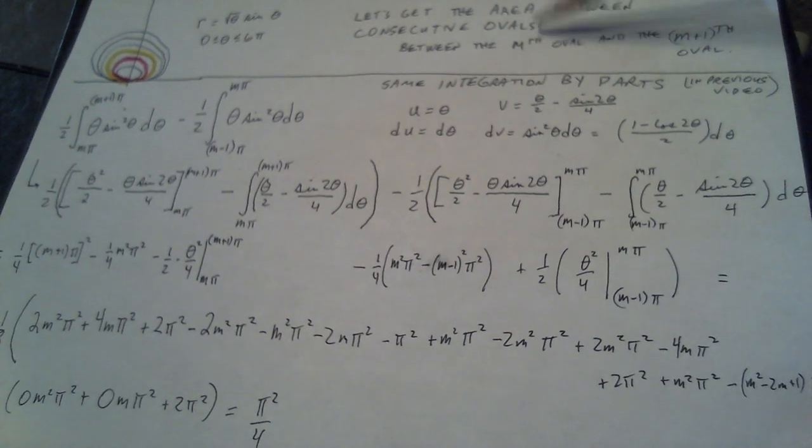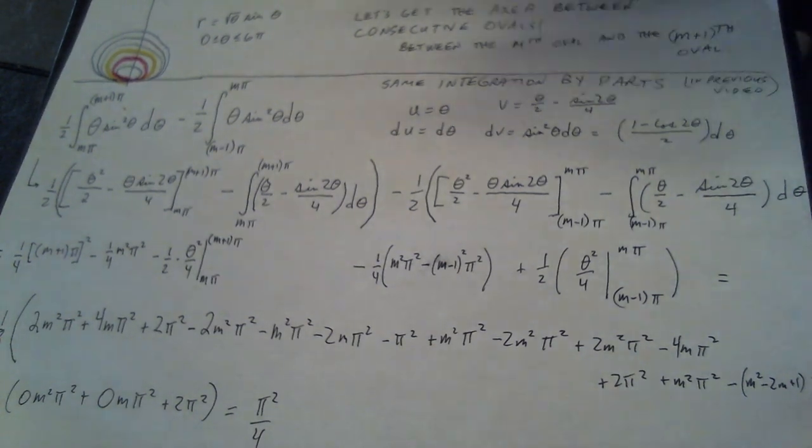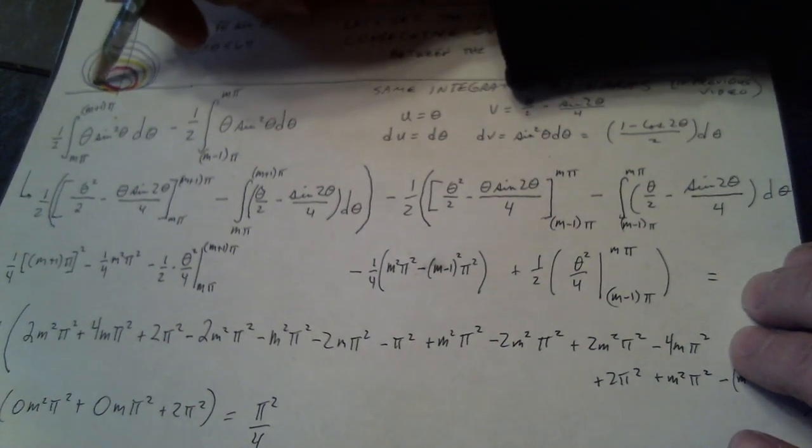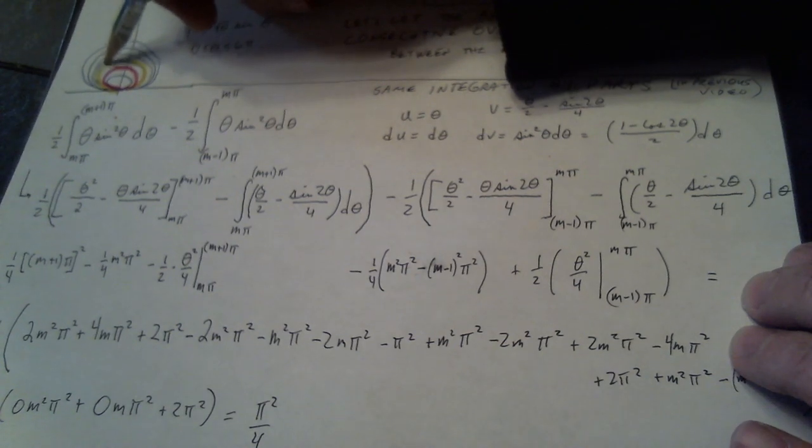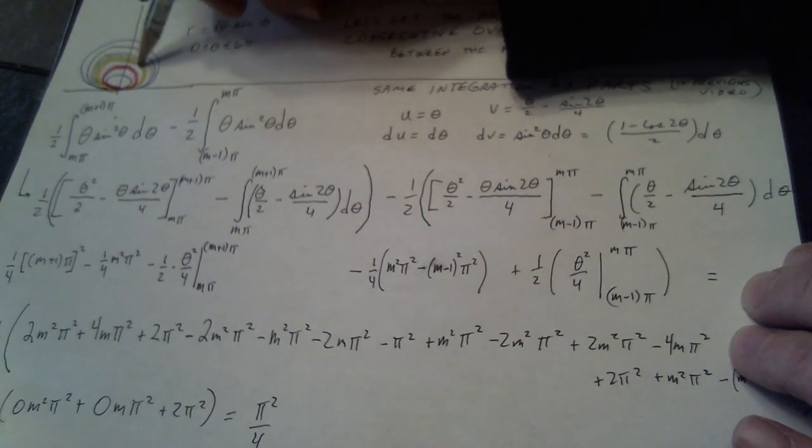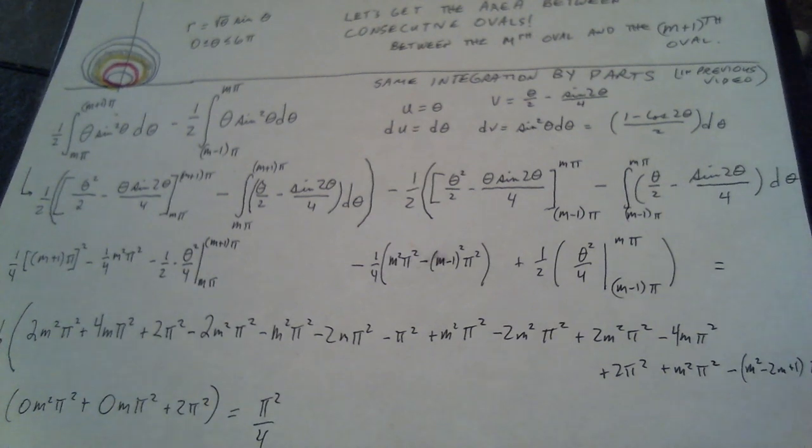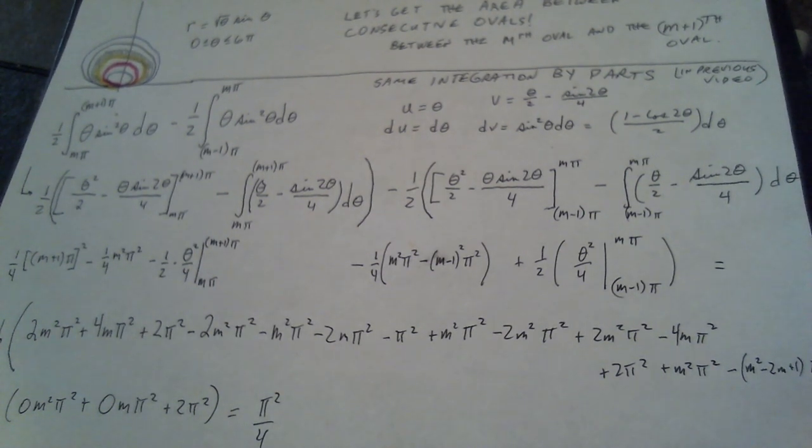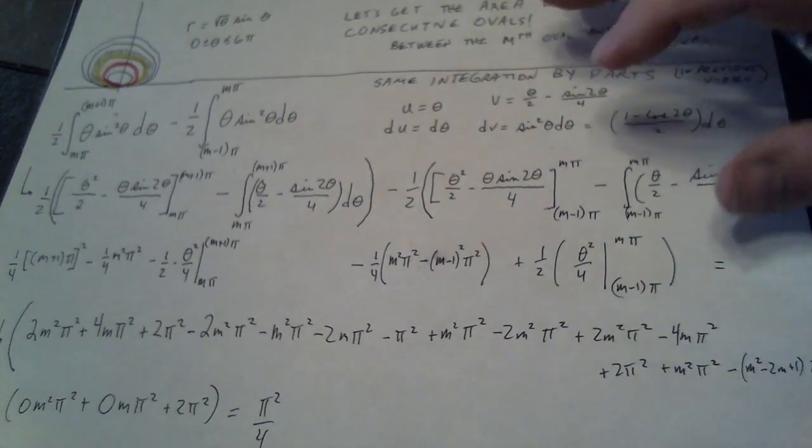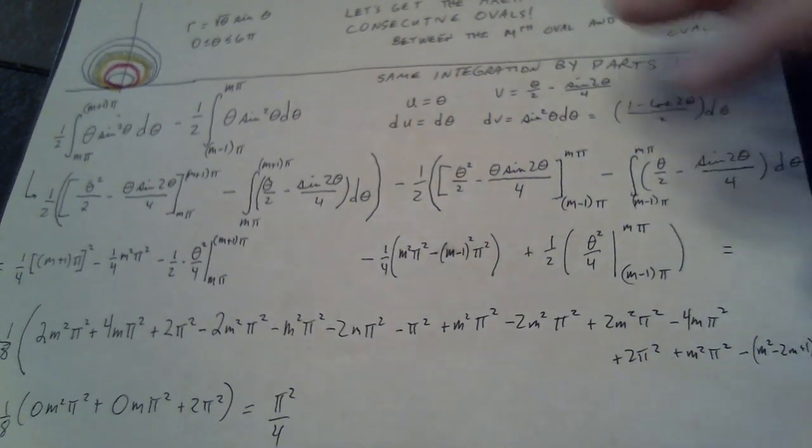So here's how to do this. I have to find the area between the mth oval and the m plus first. So in other words, between any two consecutive ovals, what's this area? So I'm finding this area right there, this little band, because I find the area of the big egg and subtract the egg that's directly inside of it, and that leaves me with this little band. And it's interesting. It turns out to be the same every time.